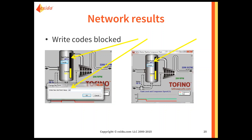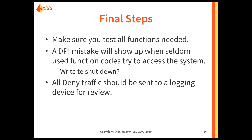But I haven't put any function codes in to allow a write function to be performed. There's a set point setting, and I click the change box to change my set point to 80. When I hit OK and look at the screen, my set point stayed at 40. My write function code was not allowed to pass through to the end device to change the setting — in this case, I didn't want it to.